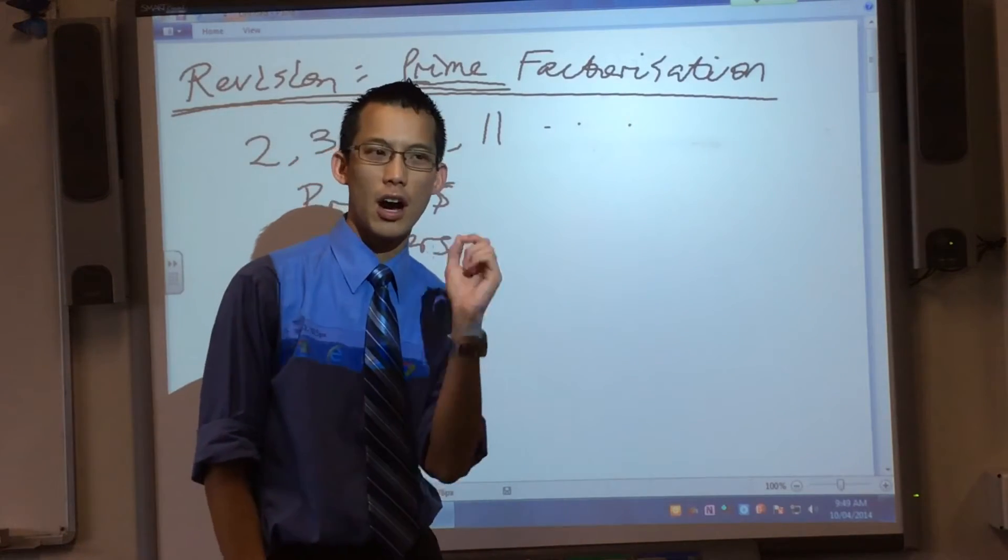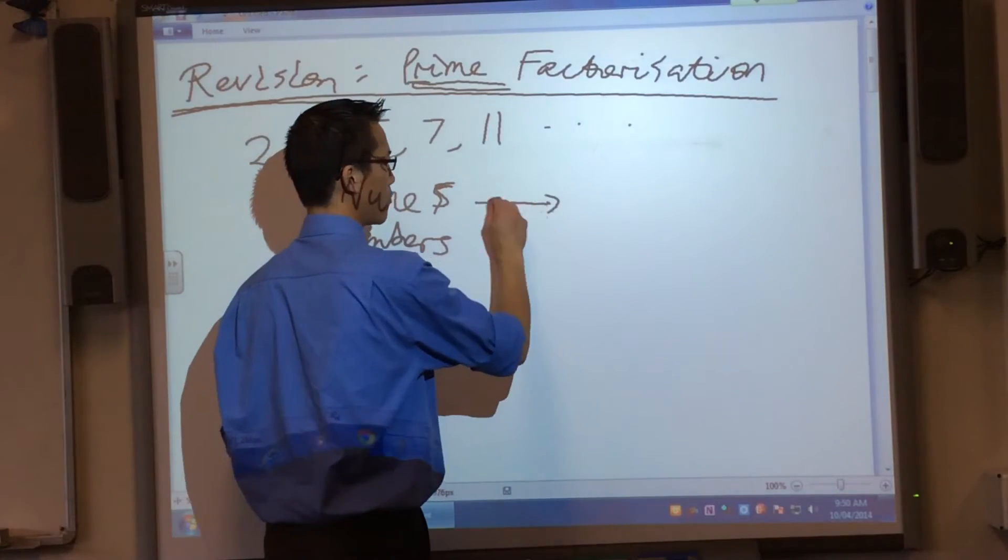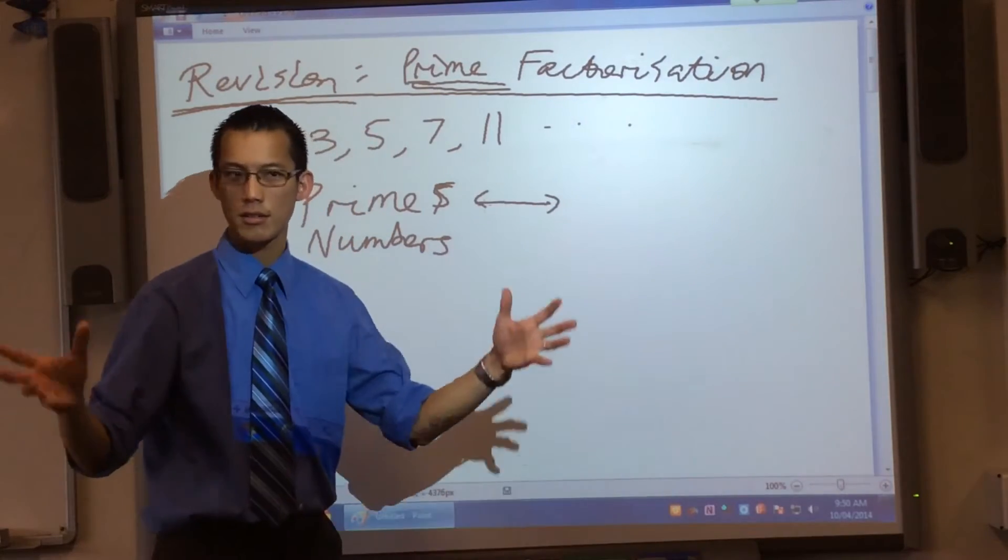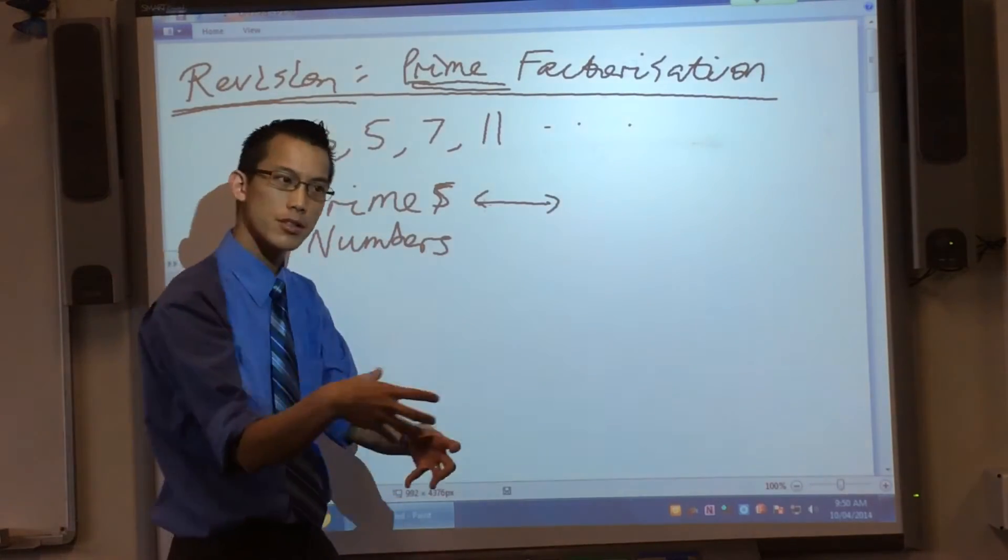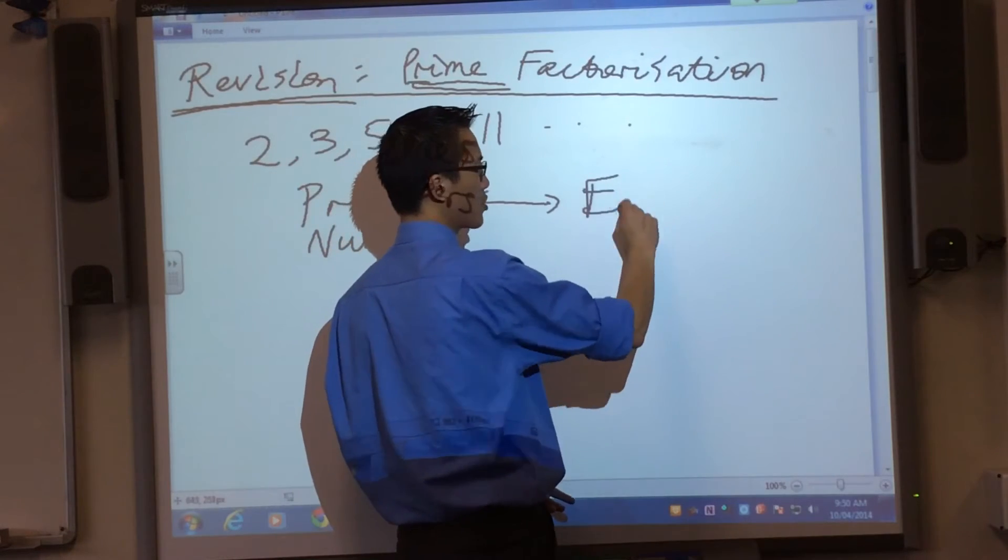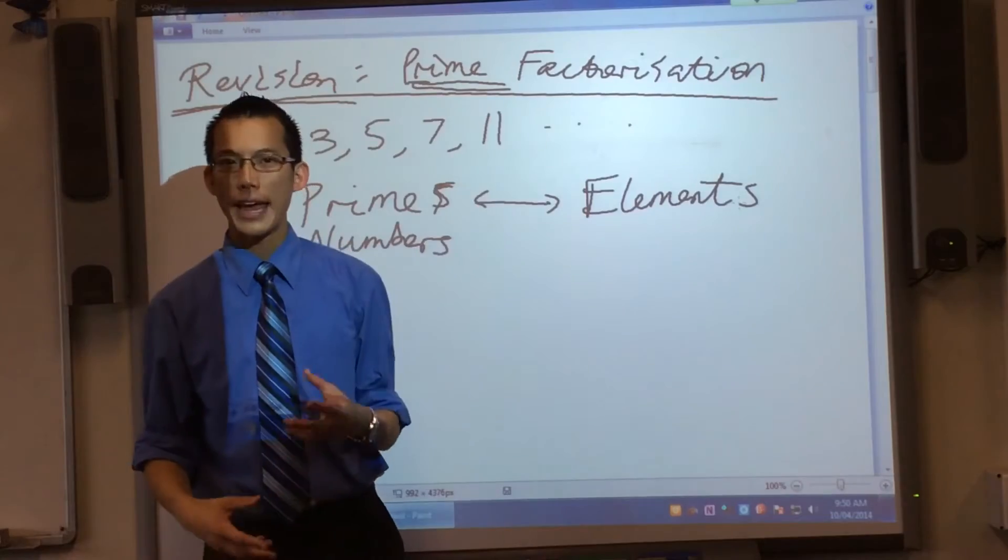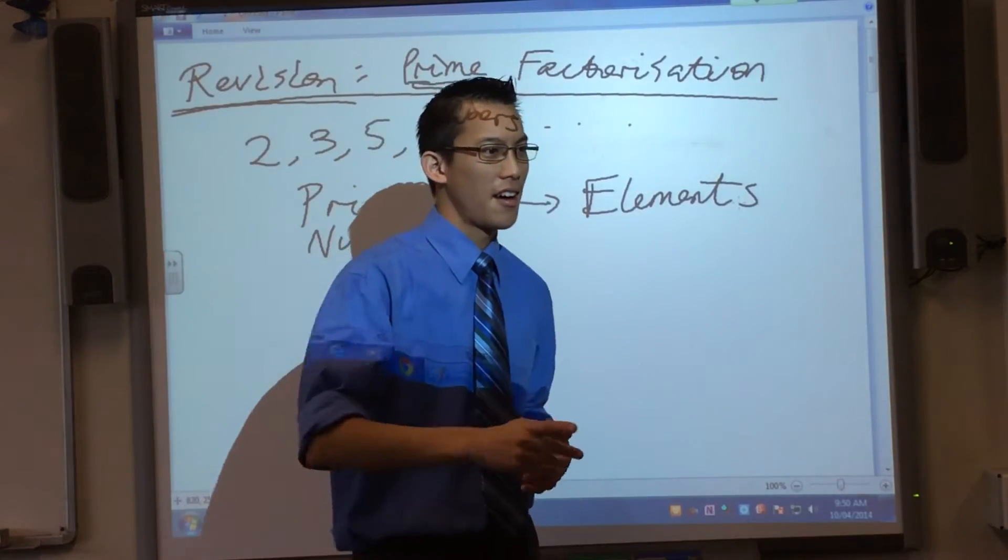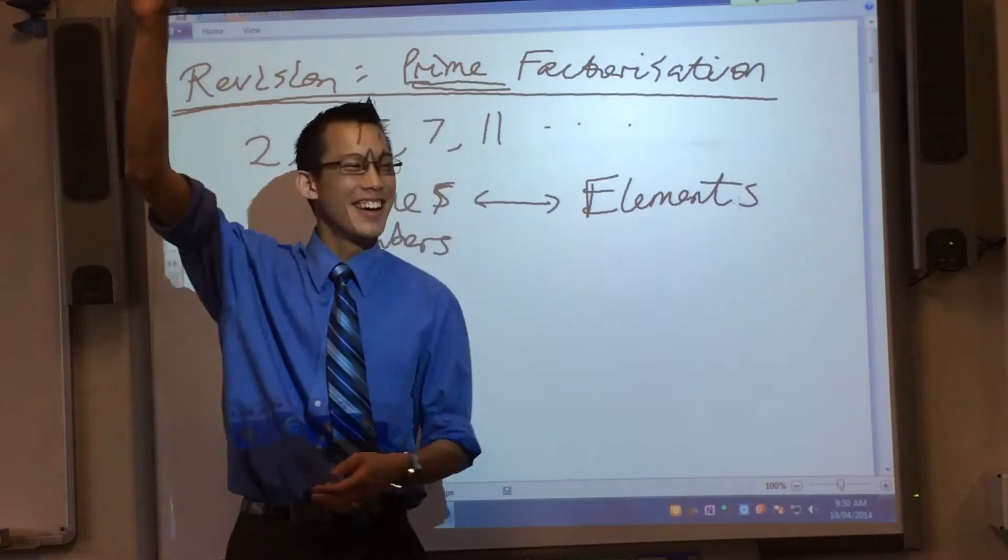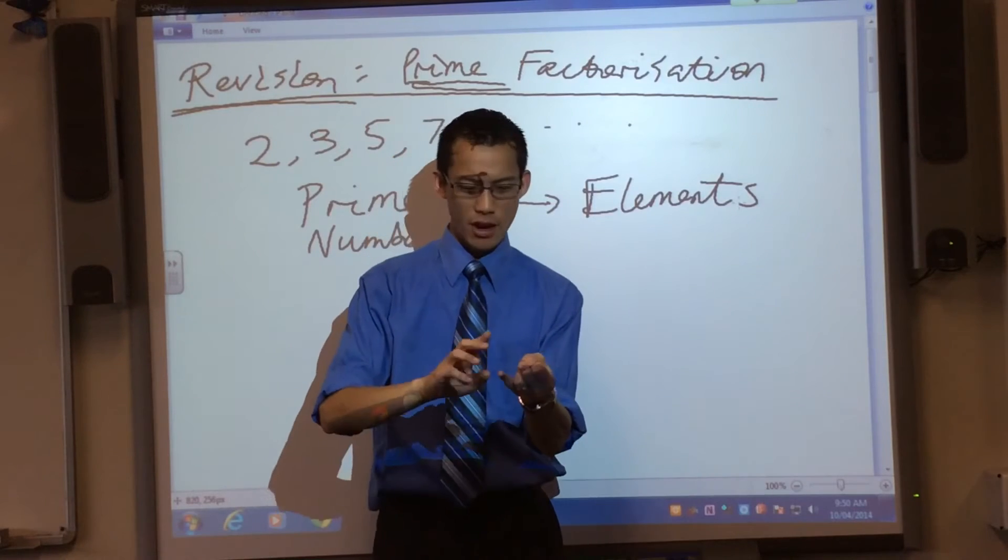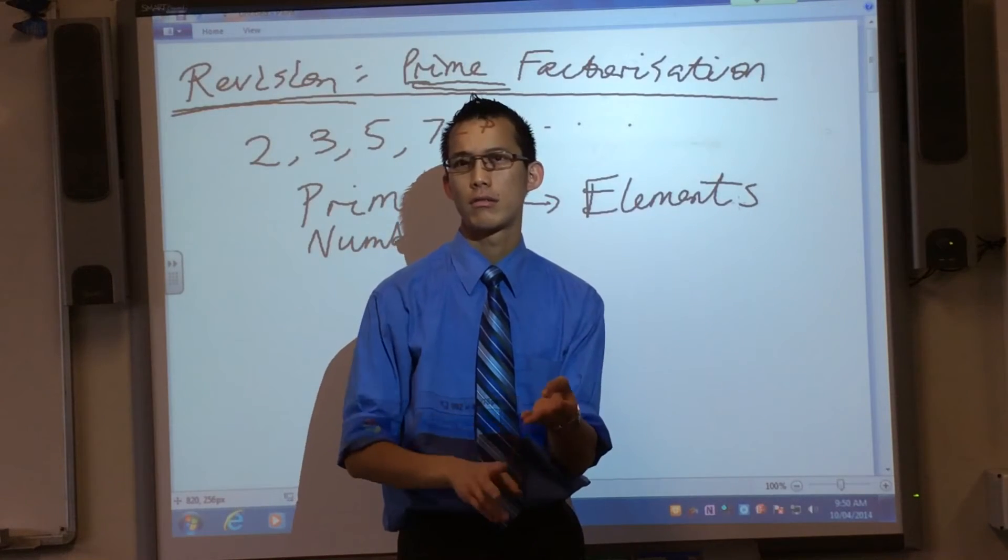The prime numbers are kind of like, in science, you learn about this topic called chemistry, right? And within chemistry you learn about these things called elements. Okay, now not those elements. By the way, the Greeks thought, yeah, earth, water, fire, there's another one, isn't it? I think there's four. N? Yeah, okay, nitrogen. The Greeks thought those were the elements.